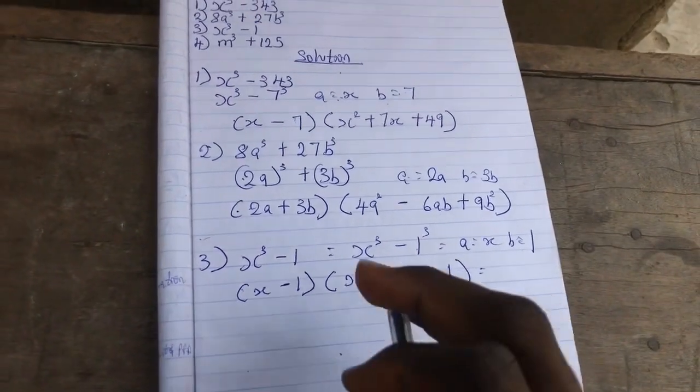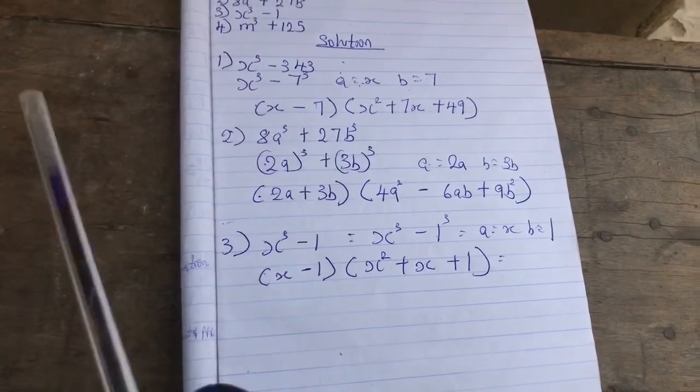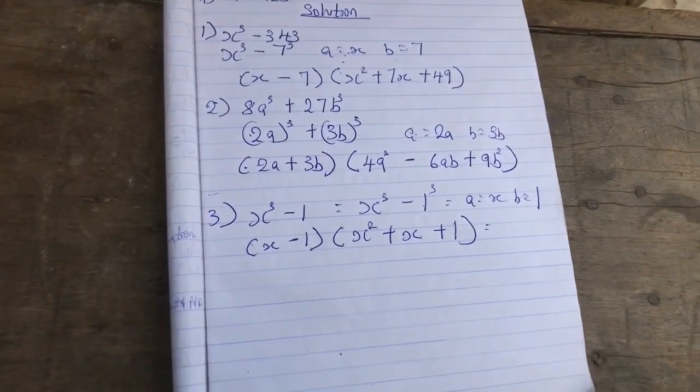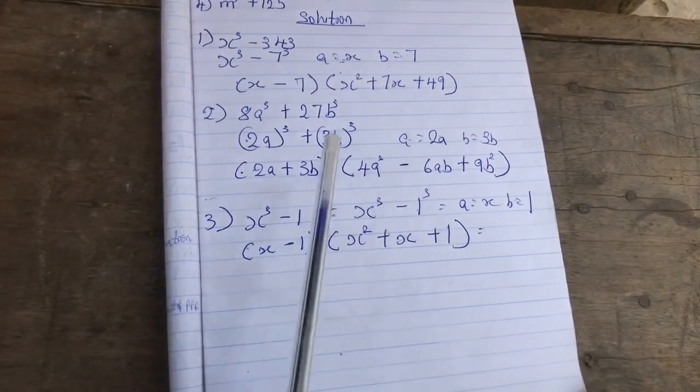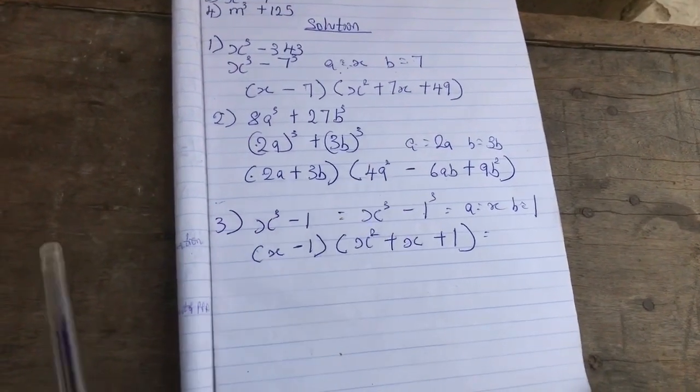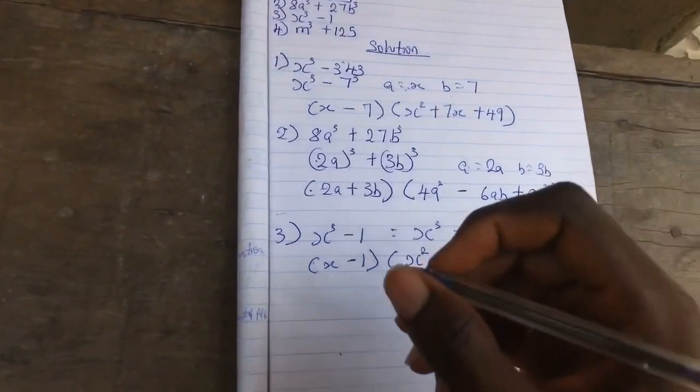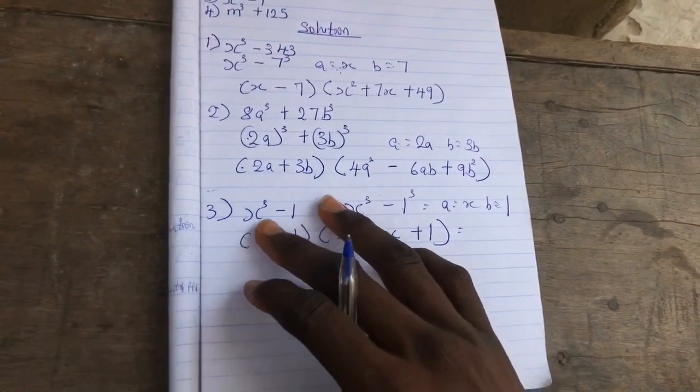As I was saying, if the power is greater than three—four, five—that's when binomial expansion comes in place. I don't think I've treated that topic before, so once we are done with this by God's grace, we'll move forward to binomial expansion.